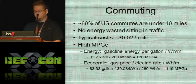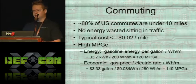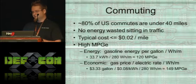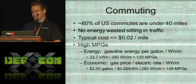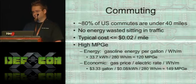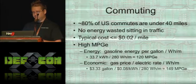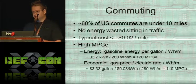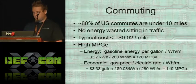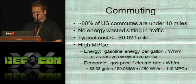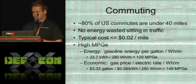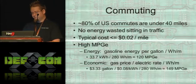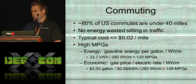My favorite use is commuting. 80% of U.S. commutes are under 40 miles, so for the vast majority of people a pretty cheap EV can take care of things. You're not using any power when sitting at a light or waiting for a train — stop and go traffic you're not using anything. It costs less than 2 cents per mile compared to 10 to 30 cents for a gas vehicle. You also have very high mileage measured in MPGE. There are two ways to calculate that: the empirical way using energy equivalency gives my car 120 MPGE, and comparing the price of gas to electricity gives me 150 in my state right now — a month ago it was over 200.